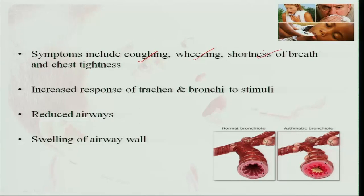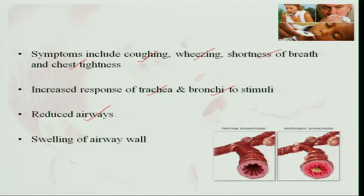Symptoms of asthma include coughing, wheezing, shortness of breath, and chest tightness, because the lungs are not able to expand fully. There is increased response of the trachea and bronchi to any stimuli. You can see the lumen here — it is a big lumen in a normal bronchi, but in an asthmatic bronchi, the inflammation causes the lumen to become very small, greatly reducing airflow and making breathing very difficult.